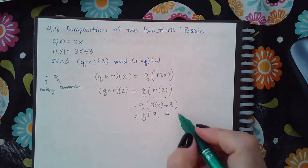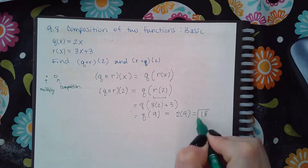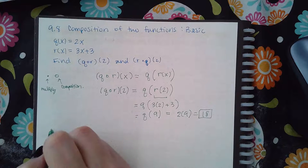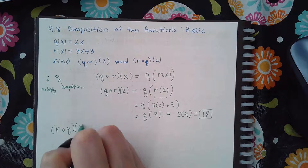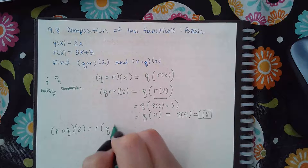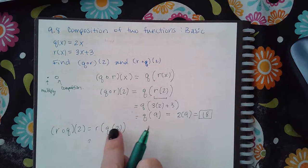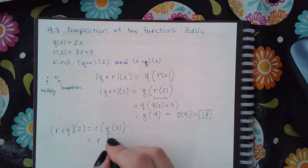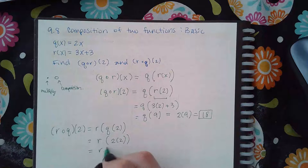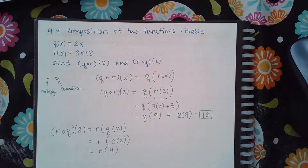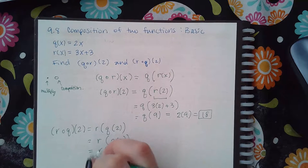Then now to find the reverse, r of q of two, I'm going to rewrite it as r of q of two. So now I'm plugging two into q, so that looks like this. And if I simplify that, I now have the expression r of 4, and that means to plug in 4 into r. So I get 12 plus 3, which is 15.